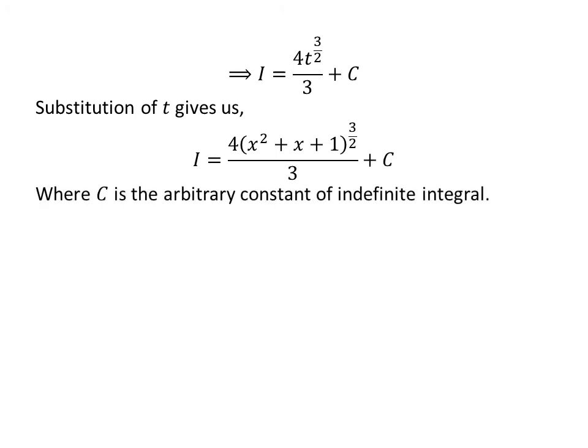Let us substitute t back in terms of x. As we had assumed t is equal to x squared plus x plus 1, so i is equal to 4 times x squared plus x plus 1 raised to the power of 3 upon 2 divided by 3 plus capital C.